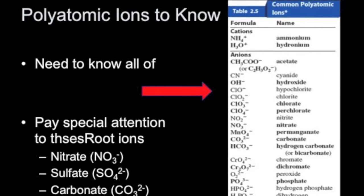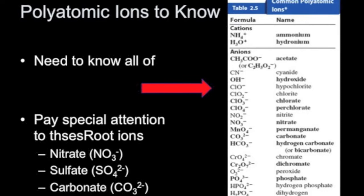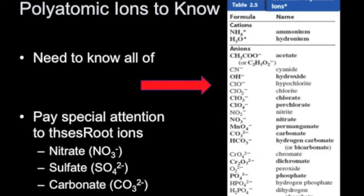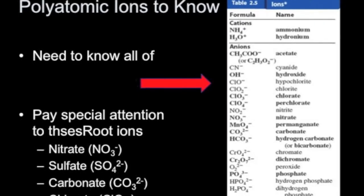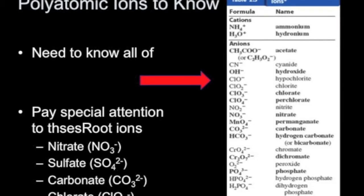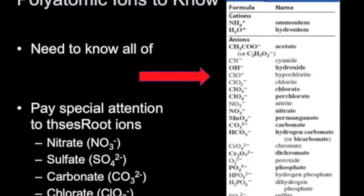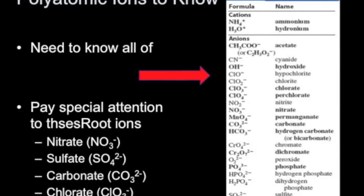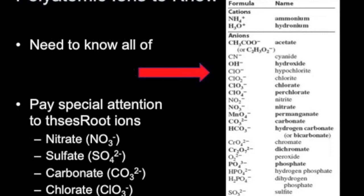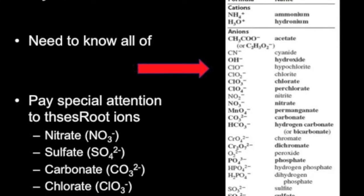Polyatomic ions are primarily covalently bound themselves, but in total they have either a positive or negative charge. We'll see the naming convention for those today. Unfortunately, the best way to know these polyatomic ions is to memorize them. Table 2.5 in your text shows a list of all the polyatomic ions you need to have memorized — things like ammonium, acetate, cyanide, hydroxide, chlorate, nitrate, permanganate, carbonate, dichromate, and phosphate.